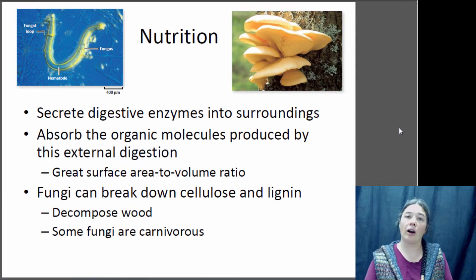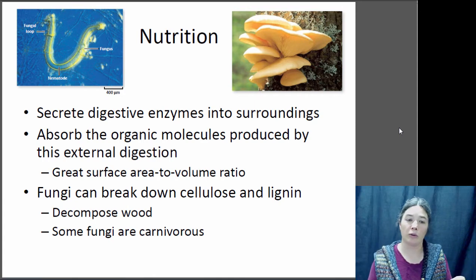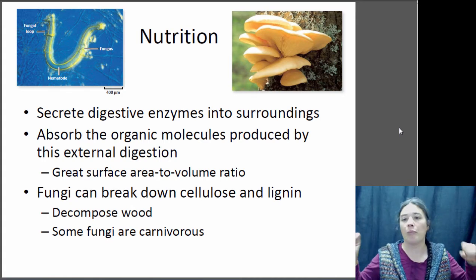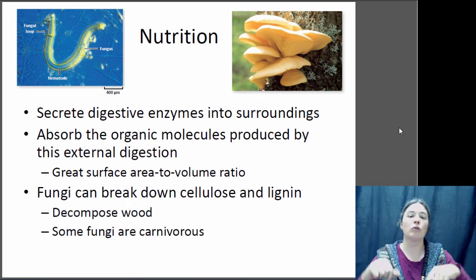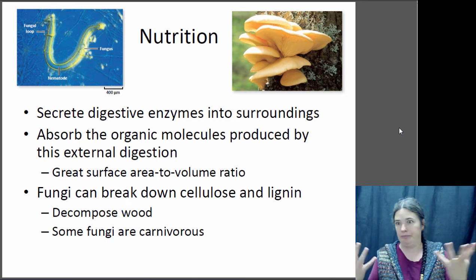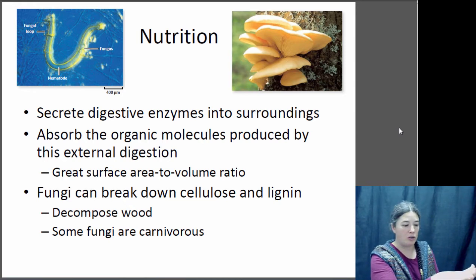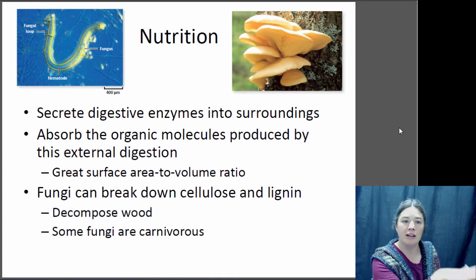All fungi are chemo-heterotrophs — they get their energy by breaking down chemical bonds and obtain carbon-based molecules from another source. Most of the time they secrete digestive enzymes into their environment, break down organic compounds, and then absorb those through the walls of their cells. It's kind of like if you wanted to eat a sandwich, you put your hand on it, excreted enzymes that digested it, and then absorbed it through your hand. That's how fungi eat.